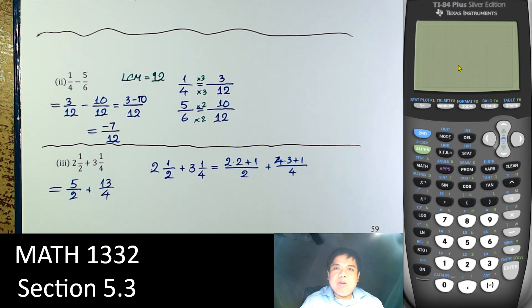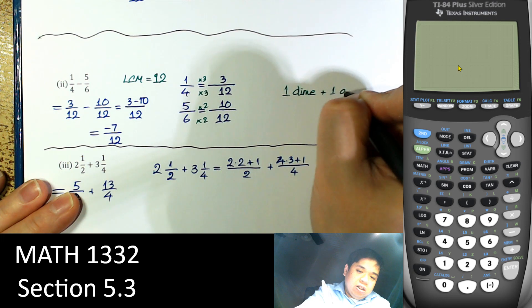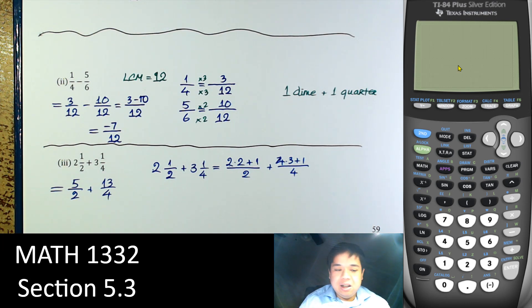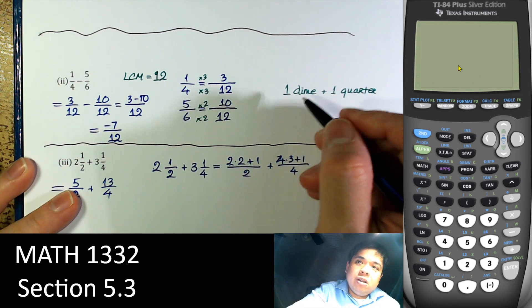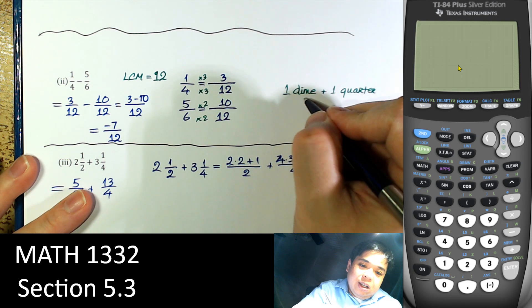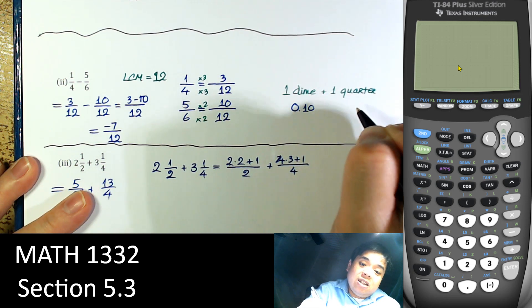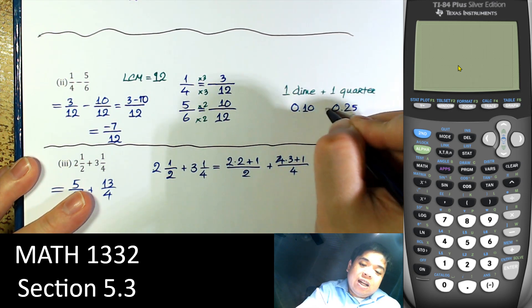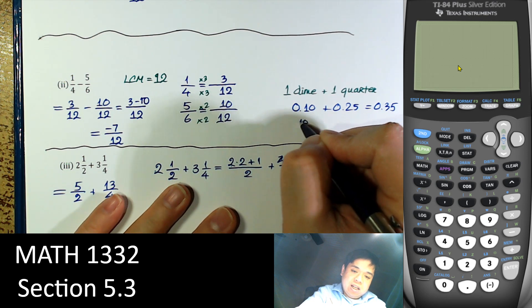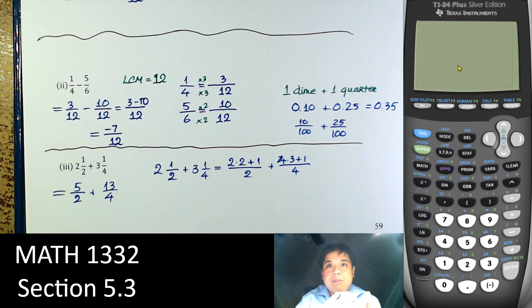Now when we add them, we need a common denominator. Think of it like adding a dime and a quarter — you can't just add 1 and 1; you need common units. A dime is 0.10 dollars and a quarter is 0.25 dollars, so together that's 0.35, or as fractions 10/100 plus 25/100. You can only add if they have the same common denominator.